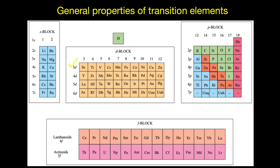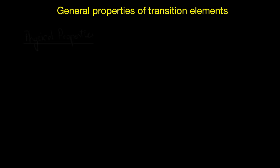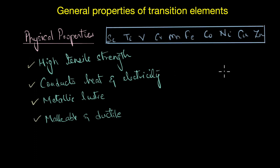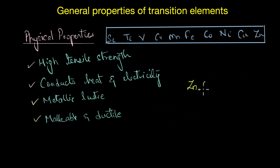Let's begin with the physical properties. We know that transition elements have metallic properties — they have high tensile strength, they conduct heat and electricity, they have metallic lustre, and are also malleable and ductile, which are the characteristic features of metals. With a couple of exceptions like zinc, cadmium, mercury, and manganese, all of them have metallic lattice structures.